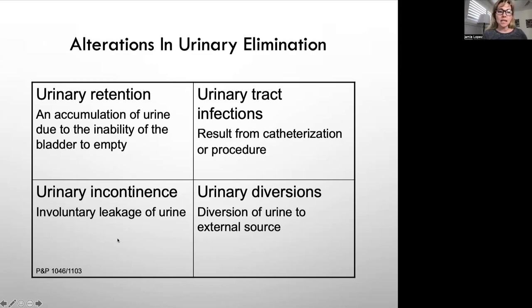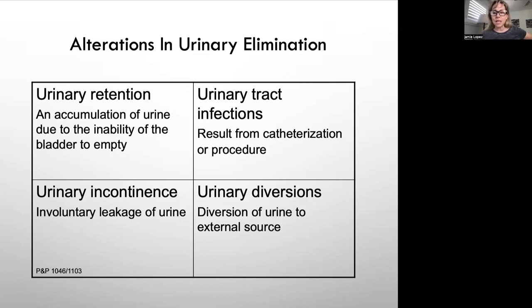Urinary incontinence is the leakage of urine. Urinary diversions divert urine to an external source. Some patients will have ileostomies or a urinary stoma to divert the flow of urine from the kidneys externally. This can be necessary due to trauma, bladder cancer, radiation therapy, a fistula, or chronic cystitis.